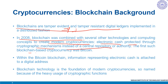The first such blockchain-based cryptocurrency was Bitcoin, which is running today. Within the Bitcoin blockchain, information representing electronic cash is attached to a digital address. Bitcoin users can digitally sign and transfer rights to that information to another user, and the Bitcoin blockchain records this transfer publicly, allowing all participants of the network to independently verify the validity of the transactions.